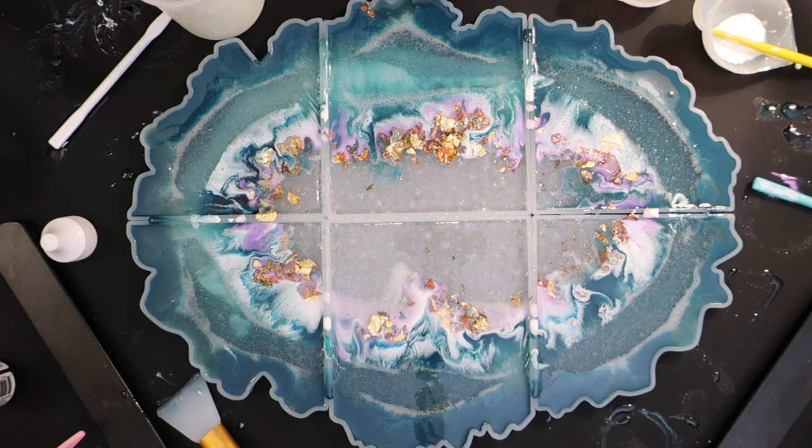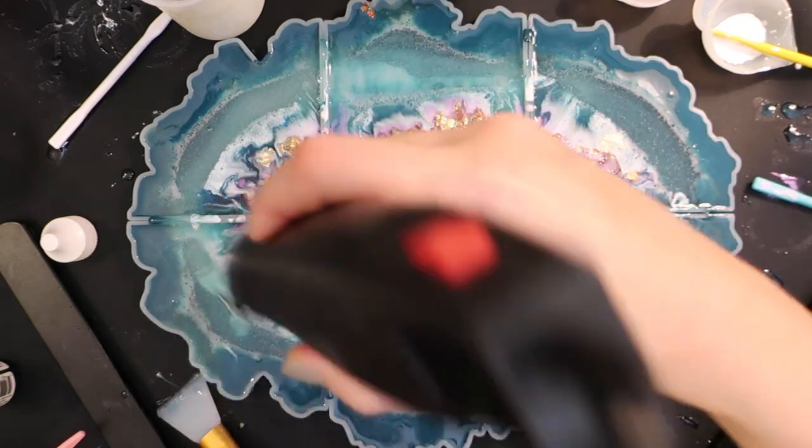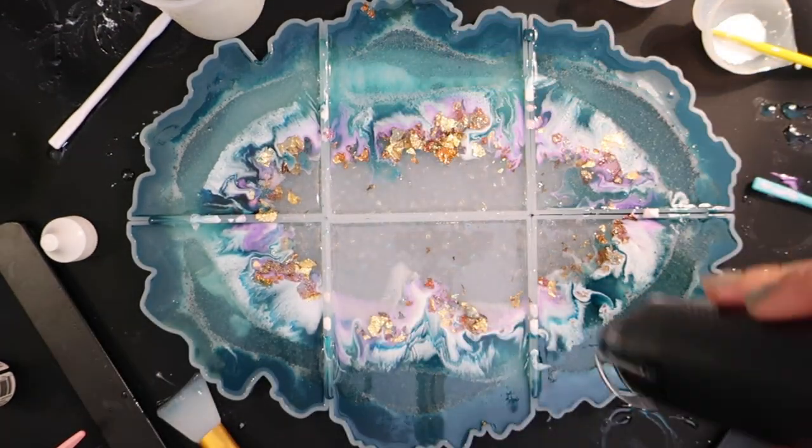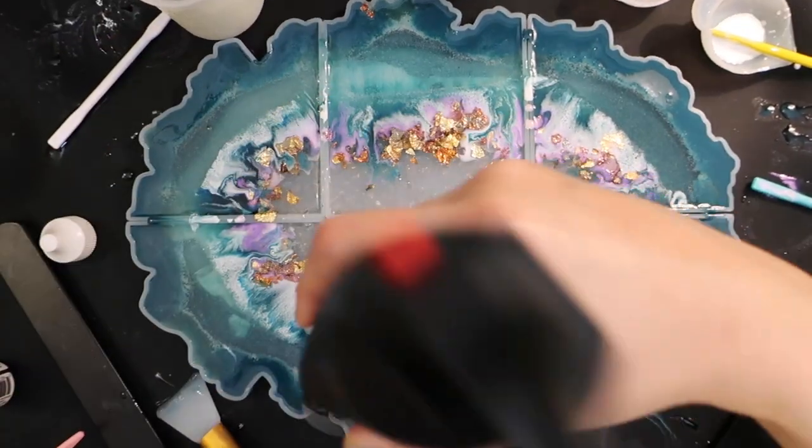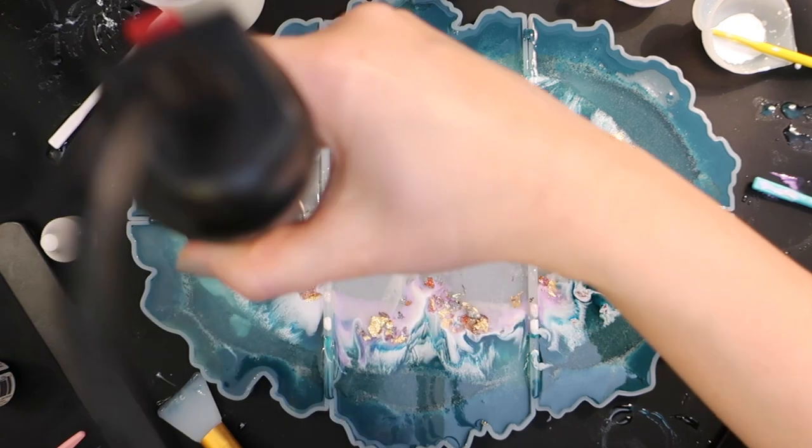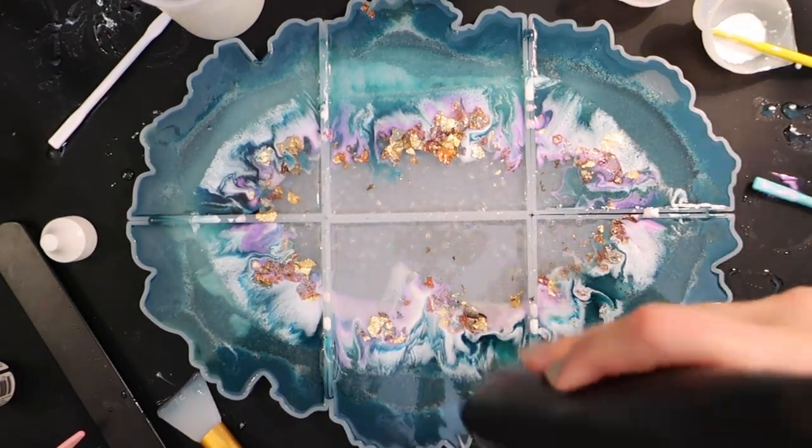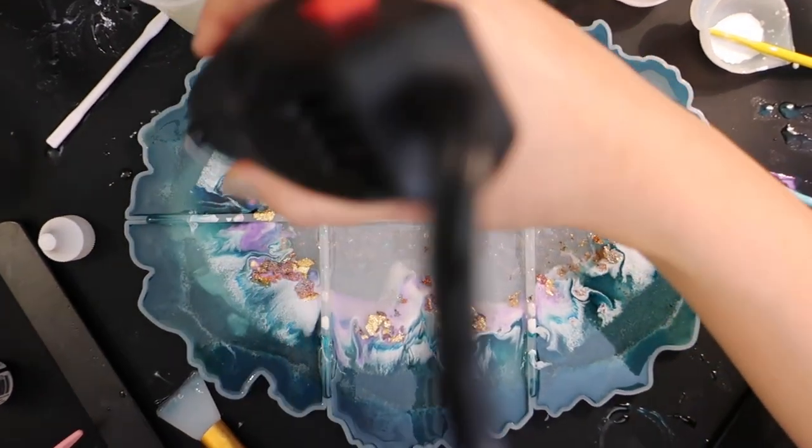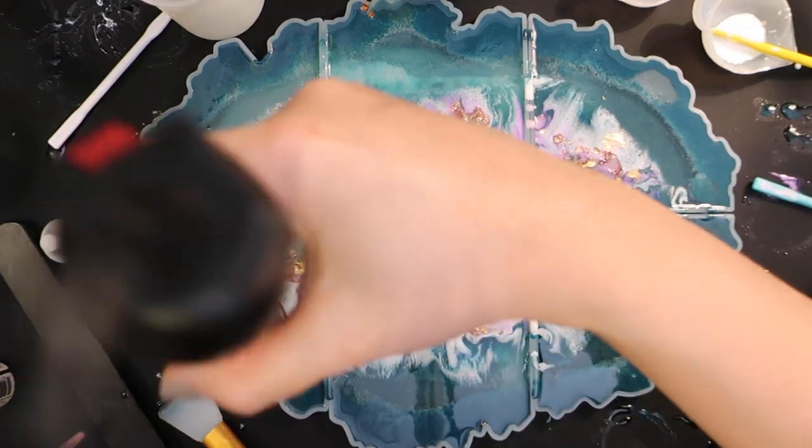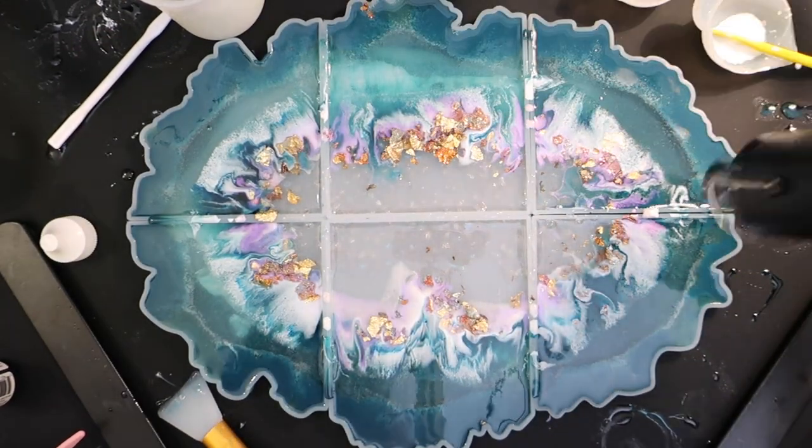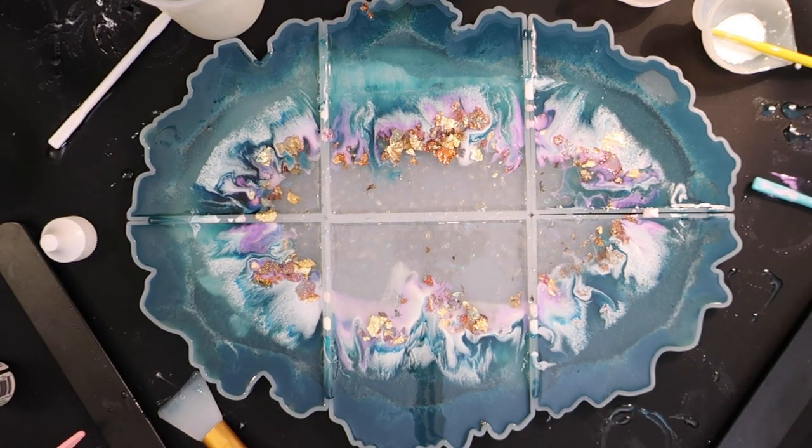So from my frantic mixing, I did whip up a whole lot of bubbles into the resin. And this resin isn't very forgiving when it comes to bubbles. So this is where your heat gun can come in super handy. I did set it on low. And it did work really well for popping those surface bubbles. But I did end up getting a lot of bubbles in the actual resin itself.